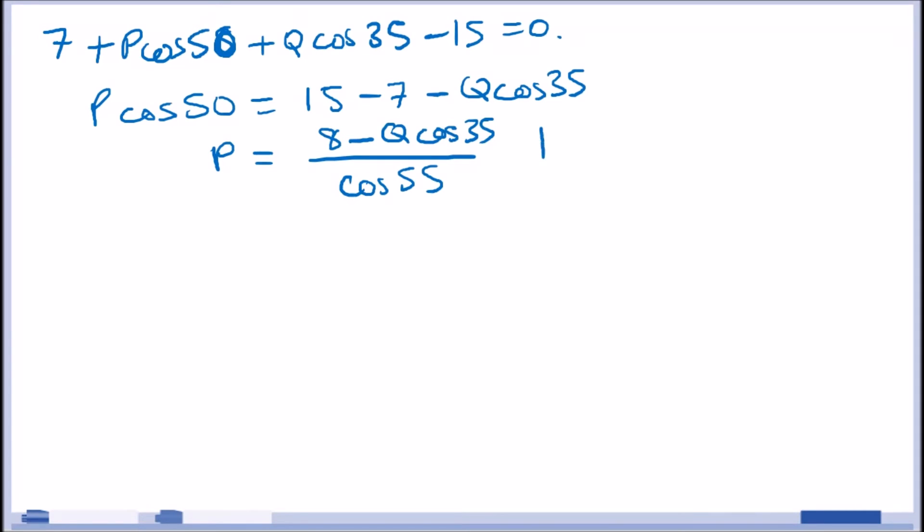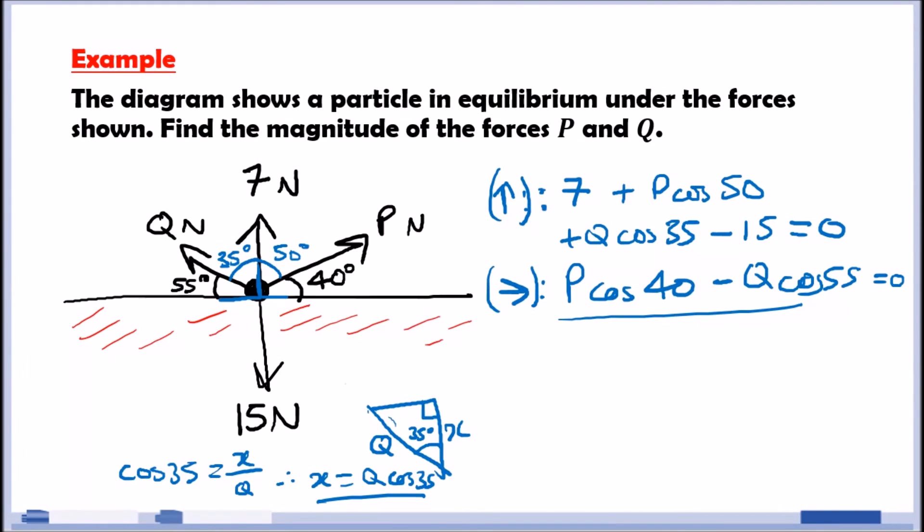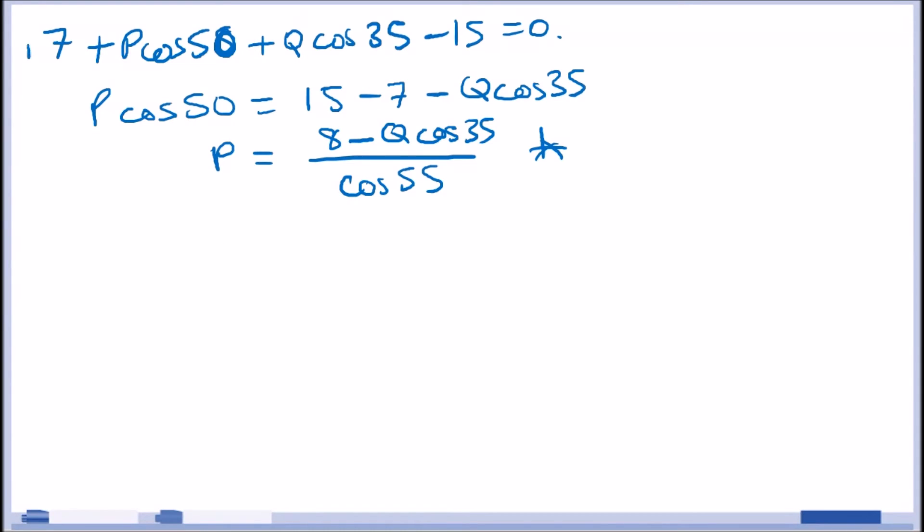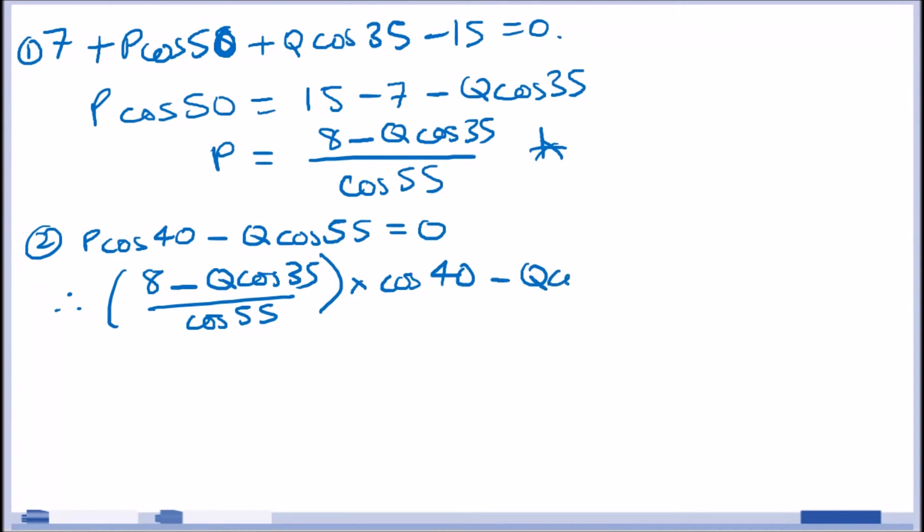Now we just want to substitute this into the other equation. The other equation is P cos 40 minus Q cos 55. This is just equation 1. Into equation 2, we have P cos 40 minus Q cos 55. So, this is all really algebra. Plotting this in, what do we have? We have 8 minus Q cos 35 over cos 55 times cos 40 minus Q cos 55 equals 0. What I would do is evaluate this step by step. I would do cos 40 multiply 8 over cos 55.